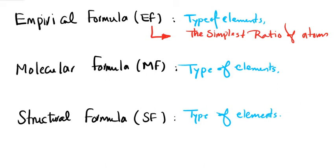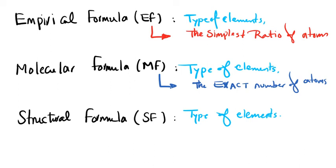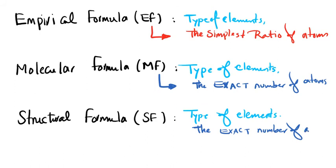This simplest ratio information is not reported in the molecular formula. For molecular formula, the specific information is the exact number of atoms. For structural formula, the exact number of atoms is also present — so exact number is not exclusive to molecular formula.